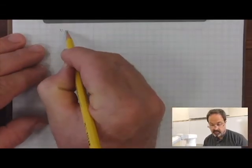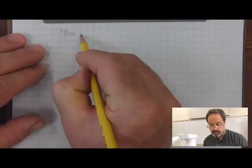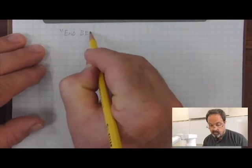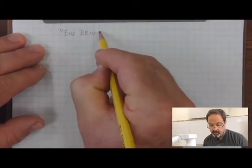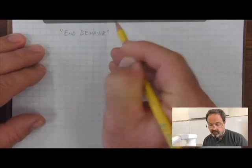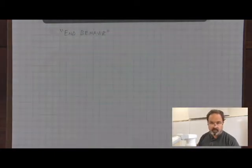End behavior is a term, and what we mean by the end behavior of the function is what's happening on the ends of the function, to the right and to the left, if we were to look down the axes in both of those directions on the graph.